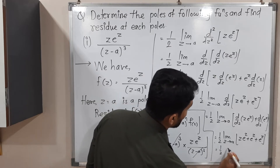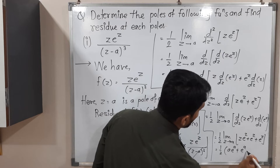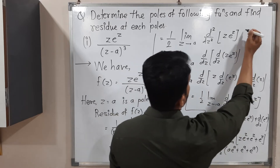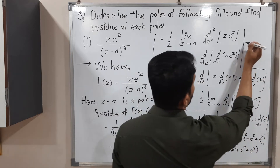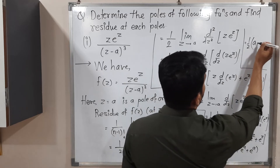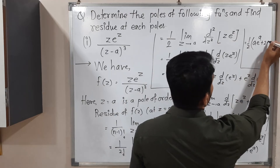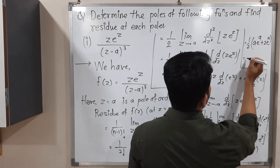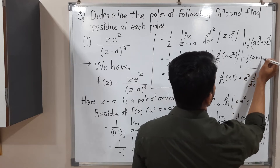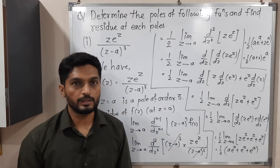Applying the limit as z tends to a, we substitute z with a everywhere: (1/2)(a·e^a plus e^a plus e^a). That gives (1/2)(a·e^a plus 2e^a). Taking e^a common: (1/2)(a plus 2)·e^a. So this is the required residue for the first example.